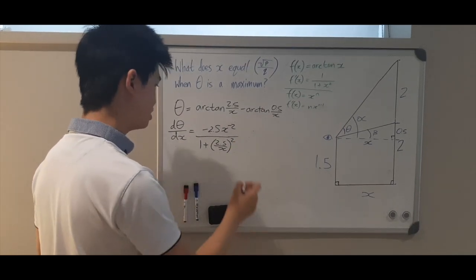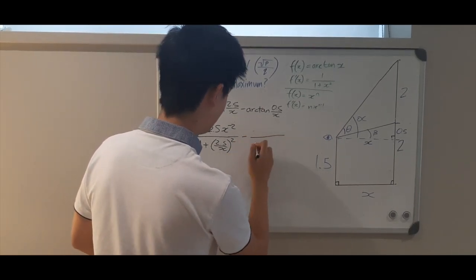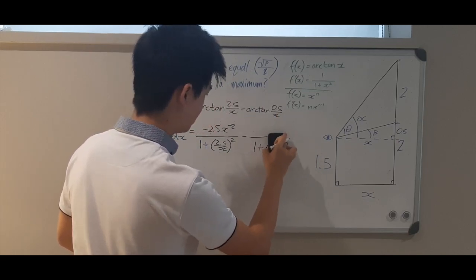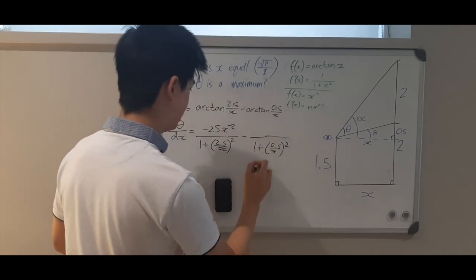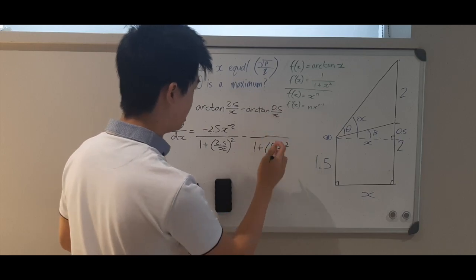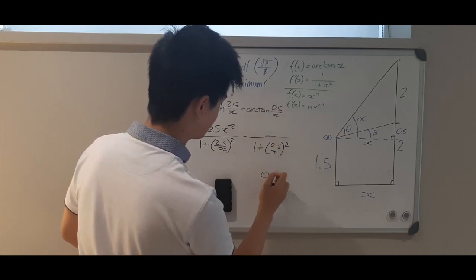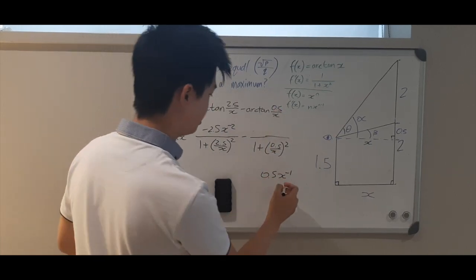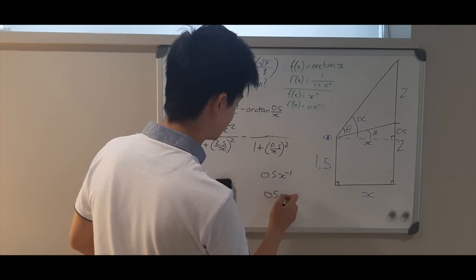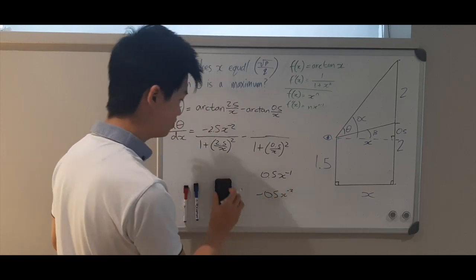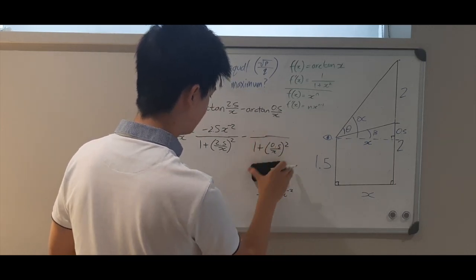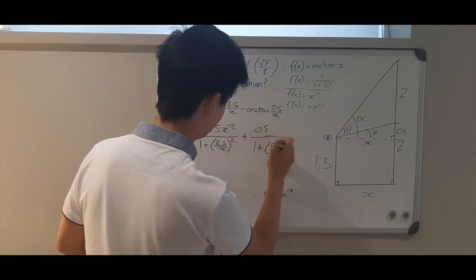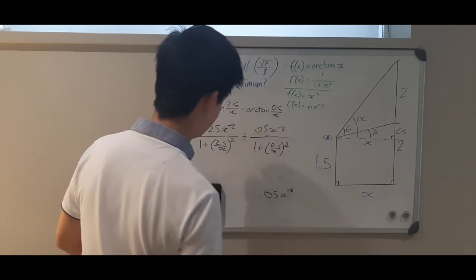Now we apply the same process to the second term. We get minus 1 over (1 + (0.5/x)²), and expressing 0.5/x as 0.5x to the negative 1, its derivative is negative 0.5x to the negative 2. Since we have two negative signs, they cancel to give a plus, so we have positive 0.5x to the negative 2. That is the full derivative.